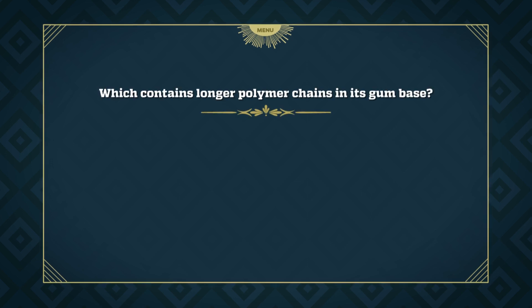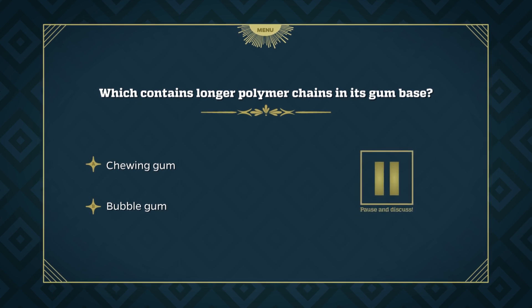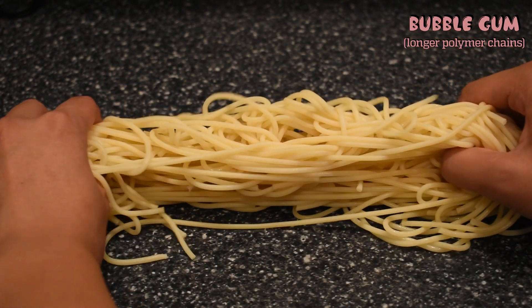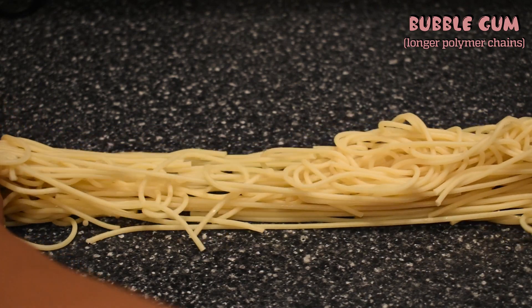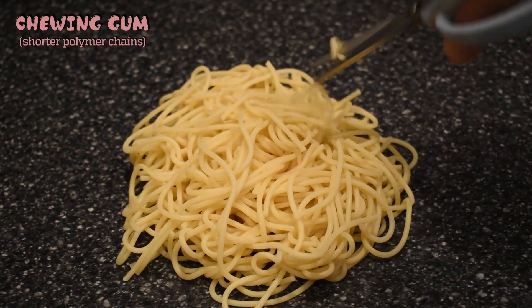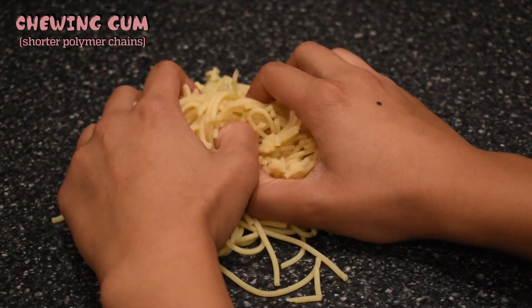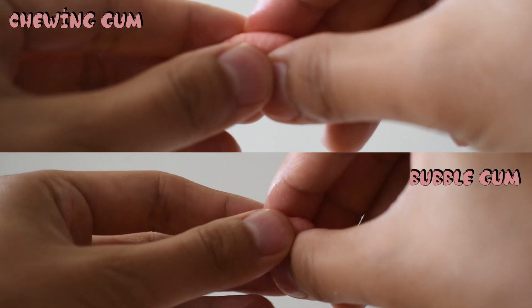Here's a question for you: between chewing gum and bubble gum, which one do you expect to contain longer polymer chains? The answer is that bubble gum is made of longer polymers than chewing gum. Let's imagine the polymers in gum base as being like spaghetti. When we try to stretch the longer spaghetti strands of bubble gum, it takes some effort to untangle the strands and separate them. In contrast, the chewing gum is much easier to separate, because the strands are shorter and they're not as tangled up. That's why bubble gum can be stretched further before it breaks.